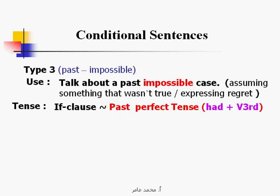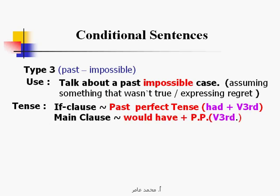Tense: the if clause uses the past perfect tense — 'had' plus the third form of the verb. The main clause uses 'would have' plus the past participle, or the third form of the verb.